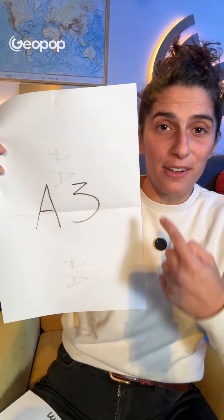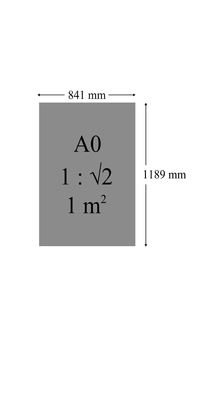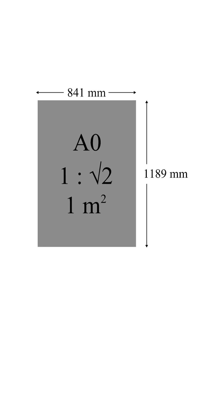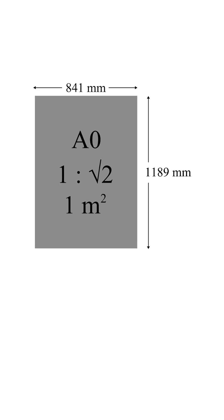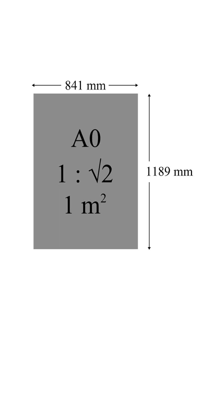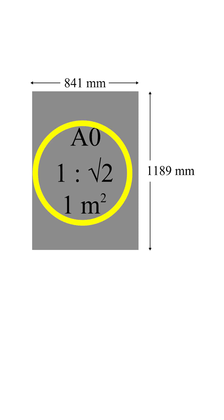But how is that possible? It's thanks to the ratio between the lengths of their sides. In all these formats, it's equal to the square root of 2. The A0 from which these formats originate was chosen for this very reason: a large sheet measuring one square meter, with its side lengths chosen precisely because their ratio equals the square root of 2.